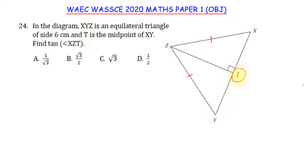T being the midpoint means it divides XY into two equal parts. Each side of the equilateral triangle is 6 cm, so we label all three sides as 6 cm. Since T is the midpoint, XT and TY are each 3 cm.